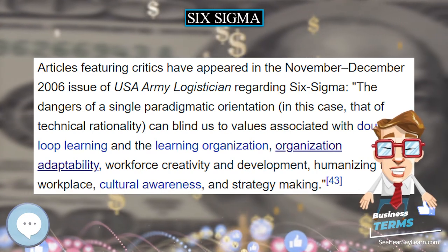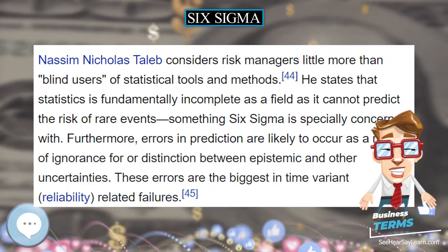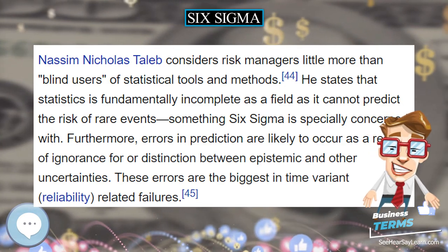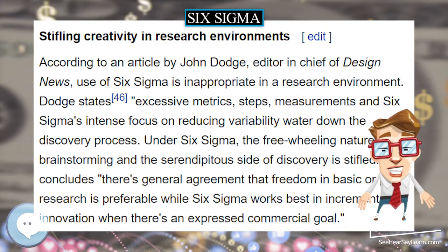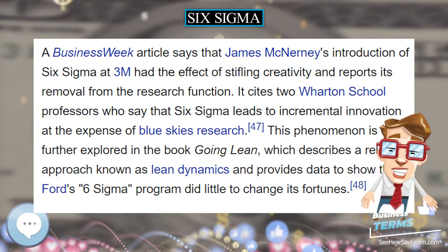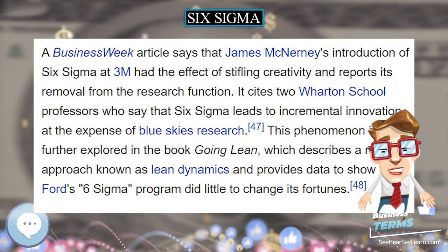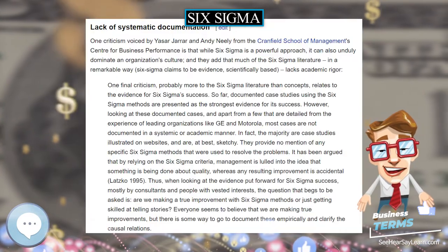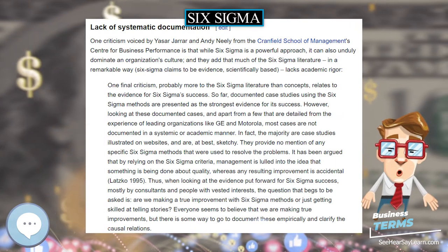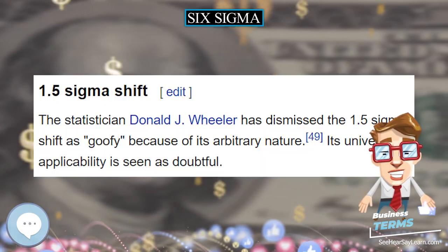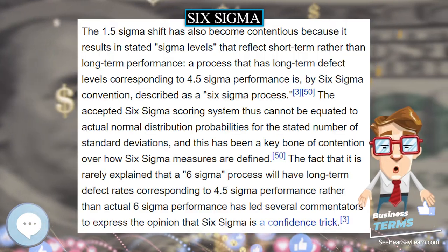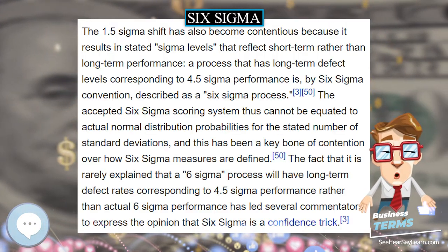The purpose of 6 Sigma is to generate organizational performance improvement. It is up to the organization to determine, based on customer expectations, what the appropriate Sigma level of a process is. The purpose of the Sigma value is as a comparative figure to determine whether a process is improving, deteriorating, stagnant, or non-competitive with others in the same business. 6 Sigma at 3.4 DPMO is not the goal of all processes.